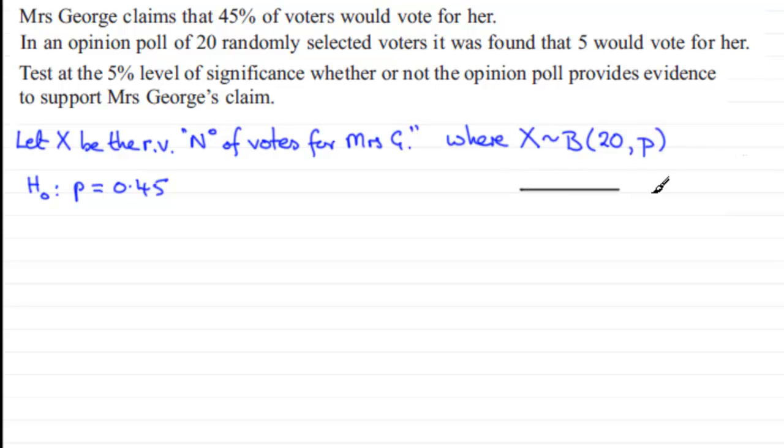If I draw a number line to represent our random variable X, it can take on any value from 0 up to 20 votes. Mrs. George is expecting 45% of people to vote for her - 0.45 times 20 comes to 9. She's expecting about 9 people to vote for her, but in this opinion poll only 5 were found to vote for her. Five is to the left of 9, suggesting that p is less than 0.45, so that becomes our alternative hypothesis H₁: p < 0.45.